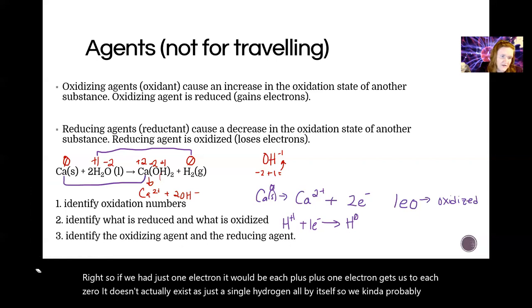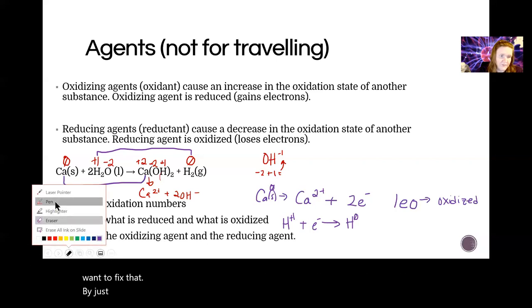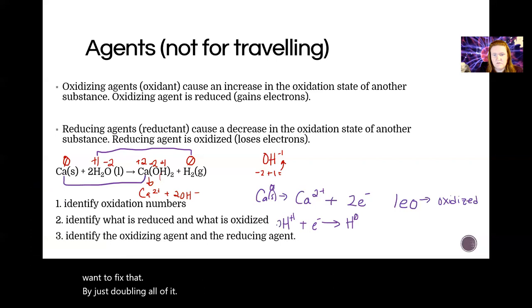It doesn't actually exist as just a single hydrogen all by itself, so we probably do want to fix that by just doubling all of it. So two hydrogen ions plus two electrons gets us H₂ gas.